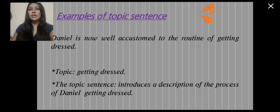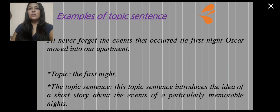I will give some samples of types of topic sentences. The first example: 'It is now well a custom to the routine of getting dressed.' The topic is 'getting dressed' and the topic sentence introduces a description of the process of getting dressed. The second example: 'I will never forget the events that occurred in the first night Oscar moved into his apartment.' The topic is 'the first night,' and this topic sentence introduces the idea of a short story about the events of a particularly memorable night.